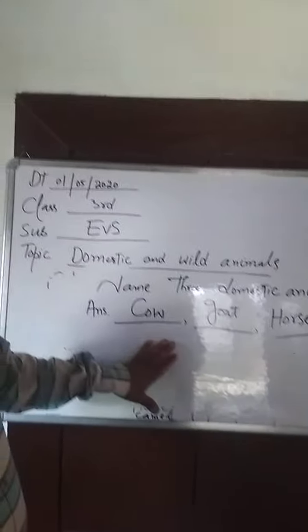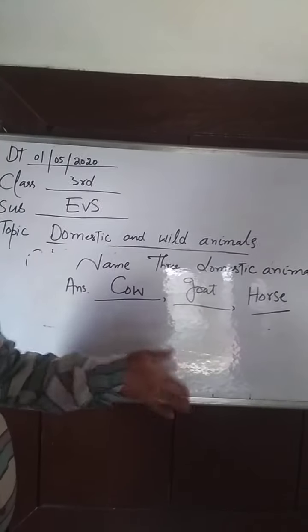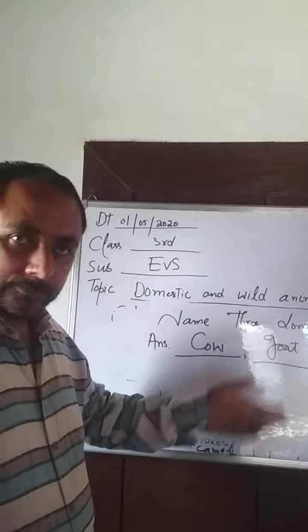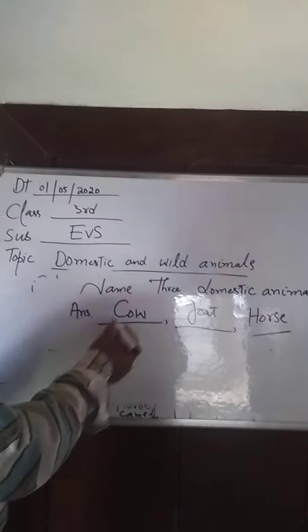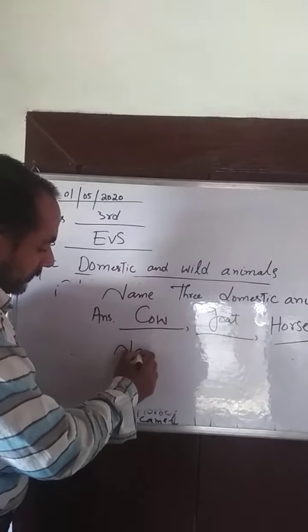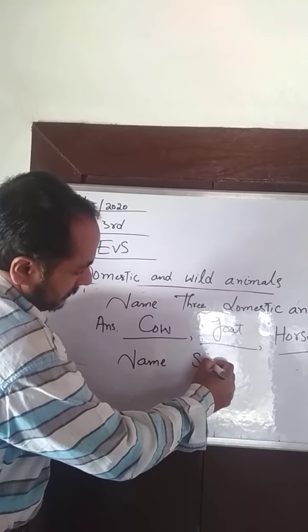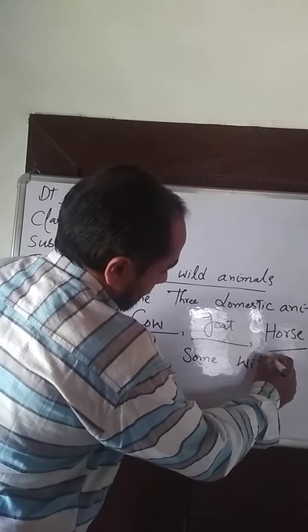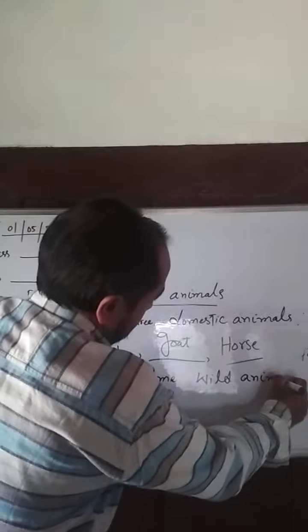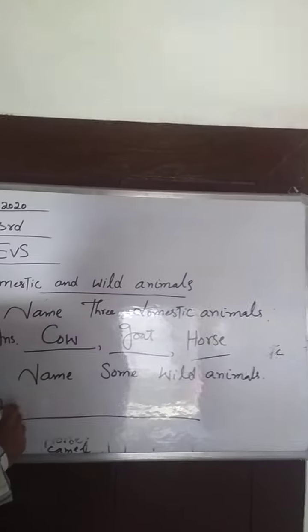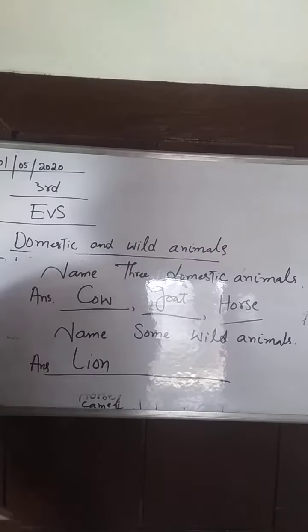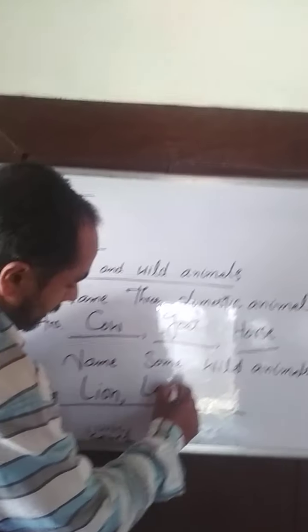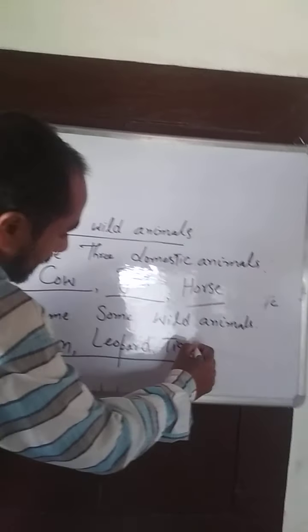We always have domestic animals with us. Now, name some wild animals. Can you draw a lion? Lion — is it a wild animal? Yes. Leopard is a wild animal. Tiger is a wild animal.